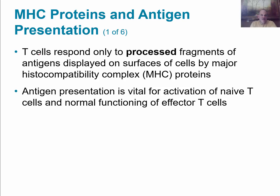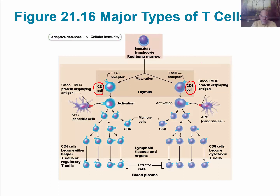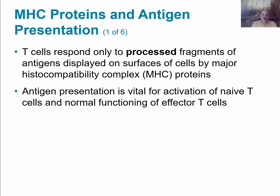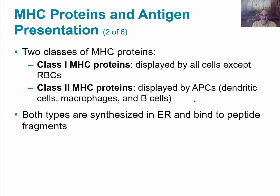Now we're going to look at the major histocompatibility proteins and the presentation of the antigen itself. This does involve major histocompatibility proteins, and there are two classes of them. T-cells are going to respond, or be activated, to processed fragments of antigens displayed on the surface of cells by MHC proteins. The antigen presentation is vital for activation of the naive T-cells and the normal functioning of the effectors. So these T-cells must be activated, and it involves both MHC proteins and the presentation of antigens.